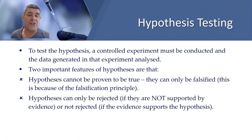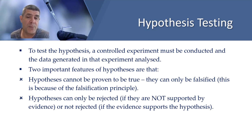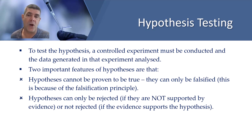To test the hypothesis, a controlled experiment must be conducted and the data generated in that experiment analysed. If we're going to do this with our hypotheses, then we have to respect two important features. Firstly, hypotheses cannot be proven to be true. This is one of the big mistakes that a lot of high school science students make when writing their scientific reports — they say 'therefore my hypothesis is true.' One of the things we must accept is that hypotheses can be falsified, which is basically related to the falsification principle, and if they are falsified, those hypotheses can be rejected.